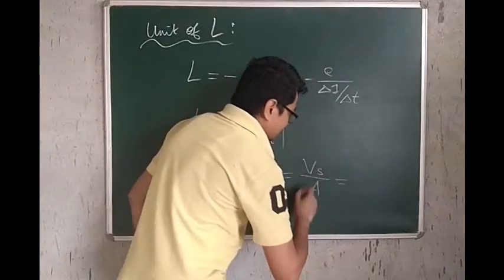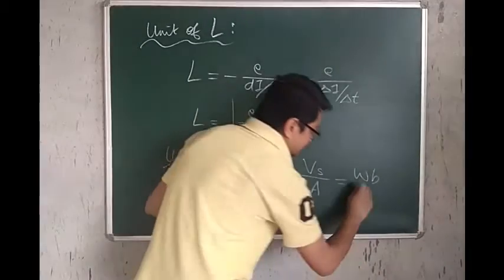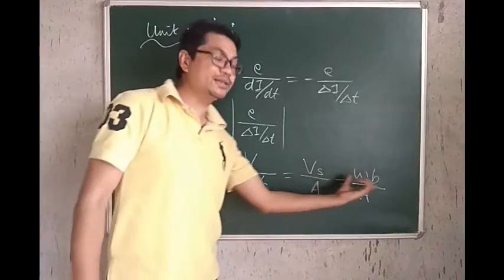So, remember, this can also be written as capital W, small b, divided by ampere. Because volt second is Weber.